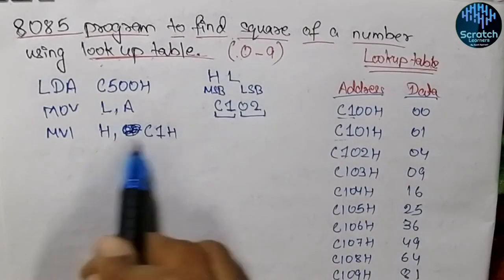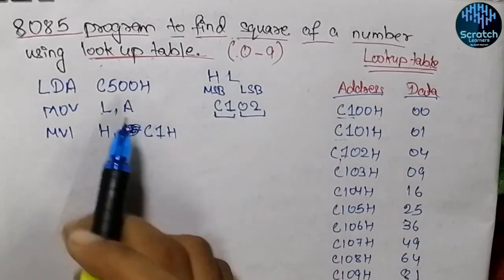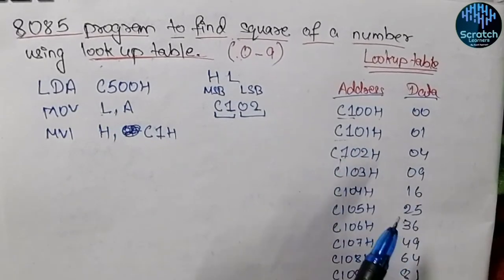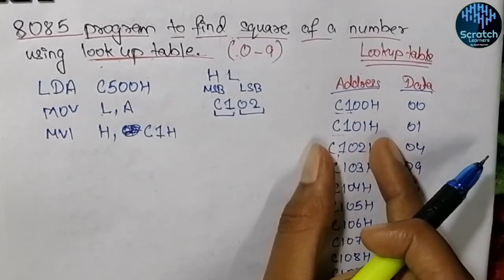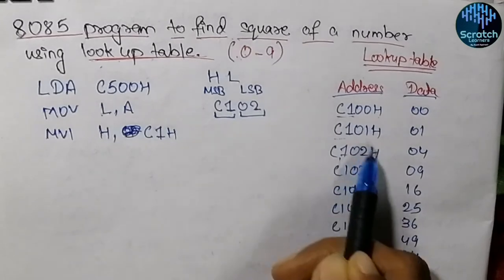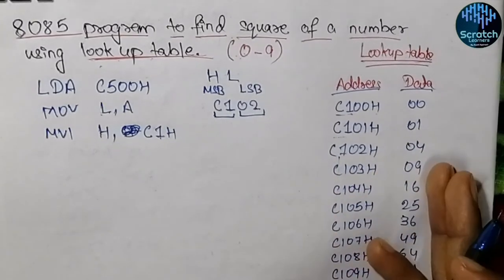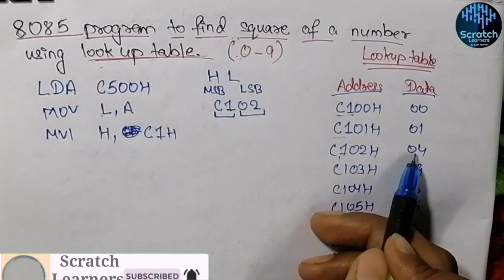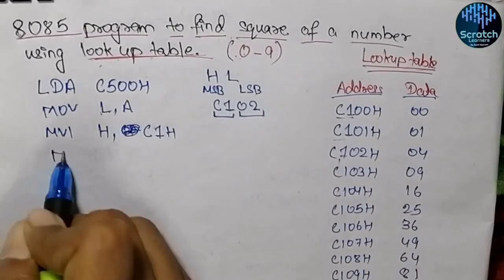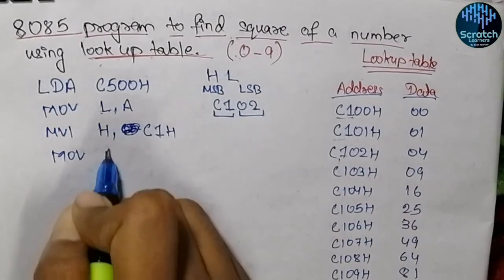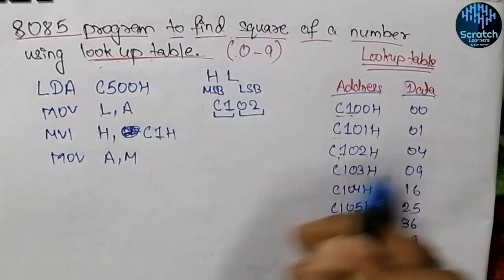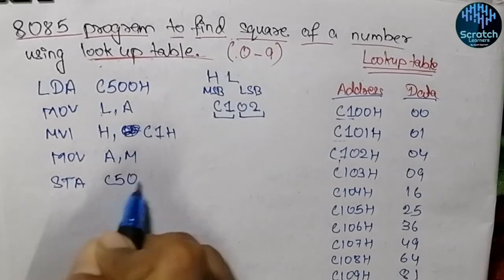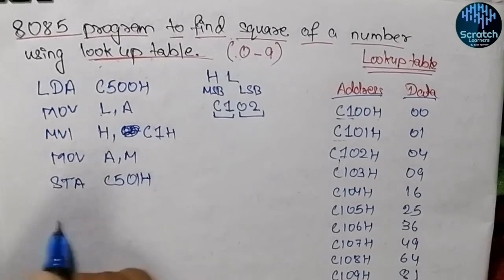Initializing H to C1H and the input in L register, the HL pair points to a specific address in the lookup table. At that address, we need to fetch the data. If at C102H we have stored the squared value 04, we use MOV A,M to copy that data into the accumulator. Then we store that data in a memory location and halt.